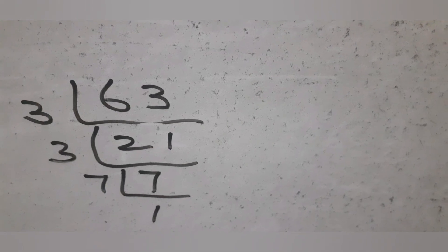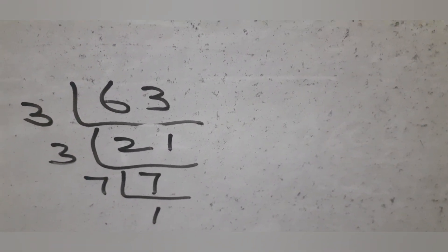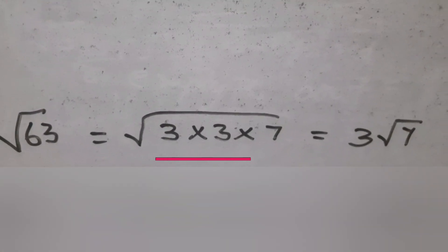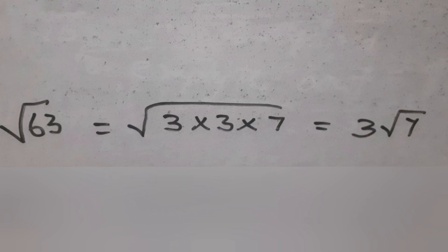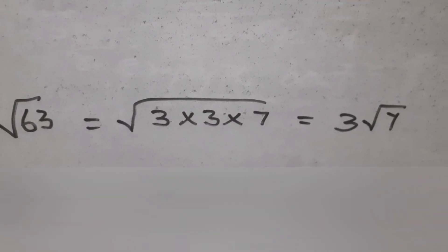We get 7. Dividing 7 by 7, we get 1. So the prime factorization for 63 is 3 into 3 into 7. So square root of 63 is 3 root 7. Next we start with square root of 175.